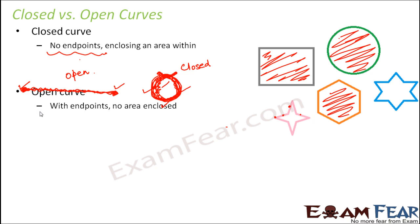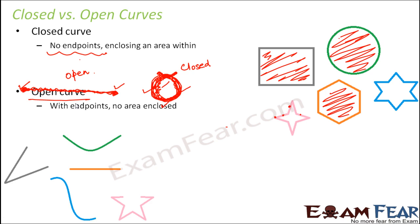Now let us look at open curves. When we talk about an open curve, they have end points and there is no concept of area enclosed, because it is not a closed area — there is no boundary, therefore there is no area enclosed. Let us look at these images. Here you see this is a curve, but it has fixed end points. The start point and the end point are fixed, and therefore there is no area that is enclosed within it. Only when it is covered from all ends will you have an area enclosed. In each of these, you see that you have start points and end points, and therefore there is no enclosed area. So these are all examples of open curves. This is how open curves and closed curves are different from each other.